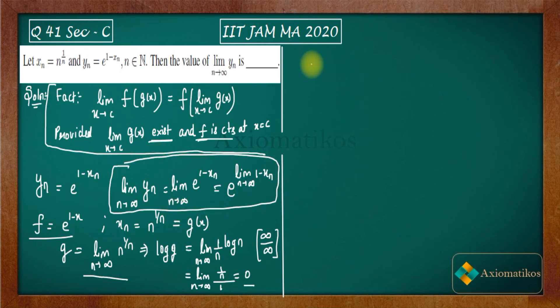So now what will happen? This limit N goes to infinity YN will be E to the power 1 minus XN. What is the limit of XN? It's 0. So you will get this. So finally, what we are getting? We are getting E as our answer. Sorry.